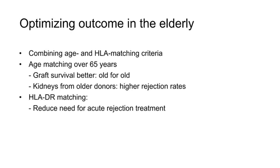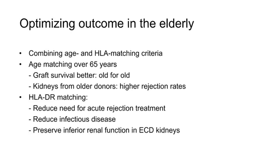Reducing the need for acute rejection treatment may reduce excess infectious disease morbidity and mortality. This will also better preserve the already inferior baseline function of these older kidneys.